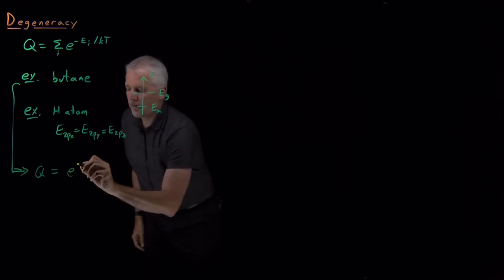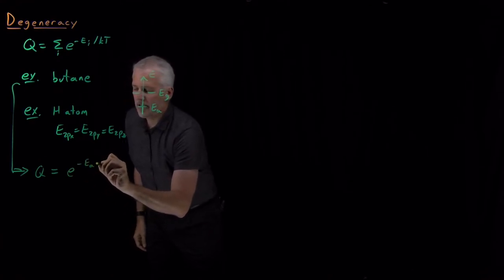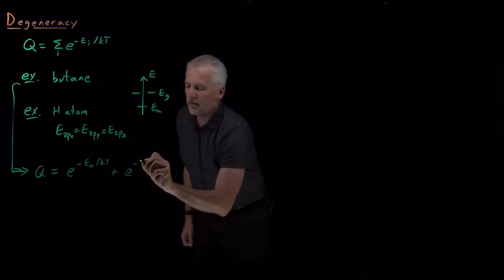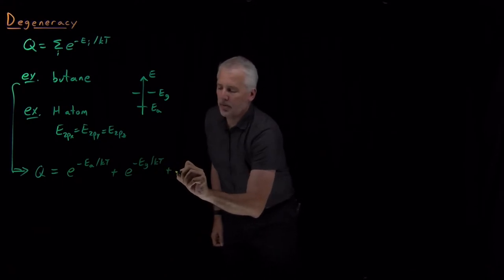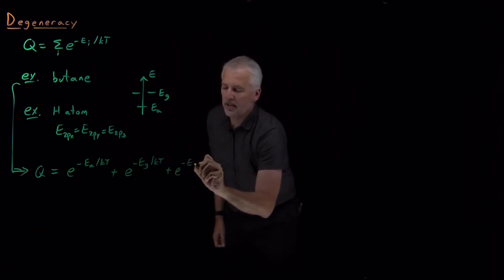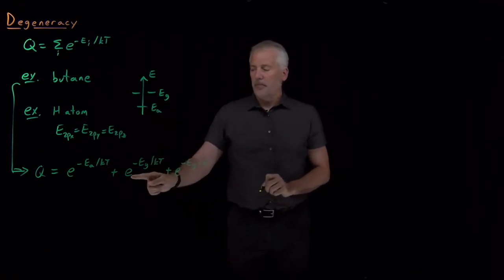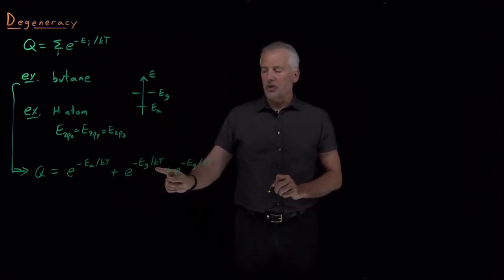That partition function looks like e to the minus e anti over kT plus a Boltzmann factor for the Gauche plus state, e to the minus e Gauche over kT, and a different Boltzmann factor for the Gauche minus state. And because the energy is the same, they both look like e to the minus e Gauche over kT.